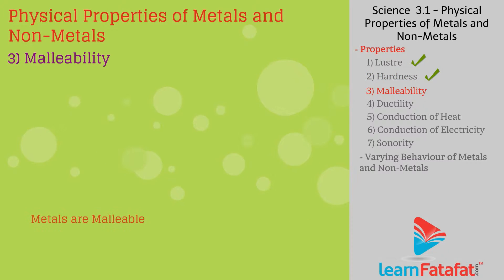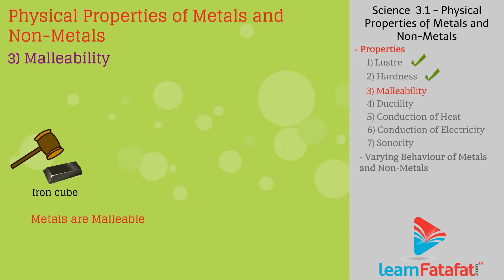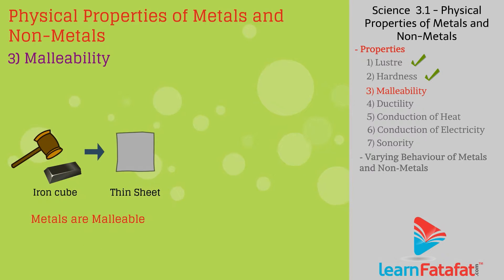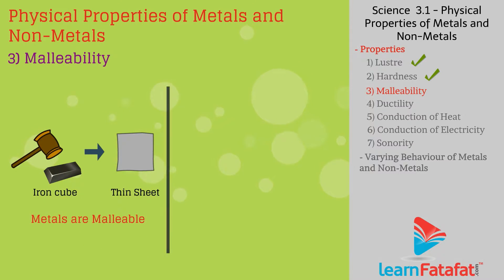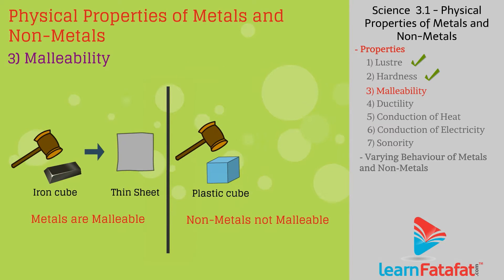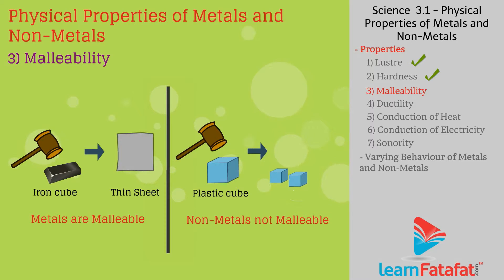Third, malleability: metals are beaten to form thin sheets. This property of metals is called malleability, for example iron and zinc. Whereas non-metals, if beaten, break into pieces.